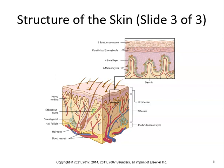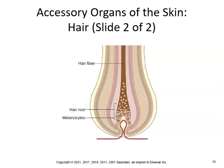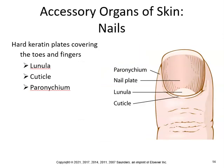There are no diagrams on the quiz or midterm, so this is just terminology you should know. Hair cells are filled with the hard protein called keratin — make sure you know how to spell keratin. Hair follicles are shafts that hold the hair; there are five million hairs on the body and a hundred thousand on the head. Melanocytes at the root form the color; hair grows 0.5 inches per month. The hard keratin plates covering the toes and fingers — you should know what a lunula is, what a cuticle is, and the paronychium. If you get a hangnail and pick at it, the paronychium can get reddish and infected.